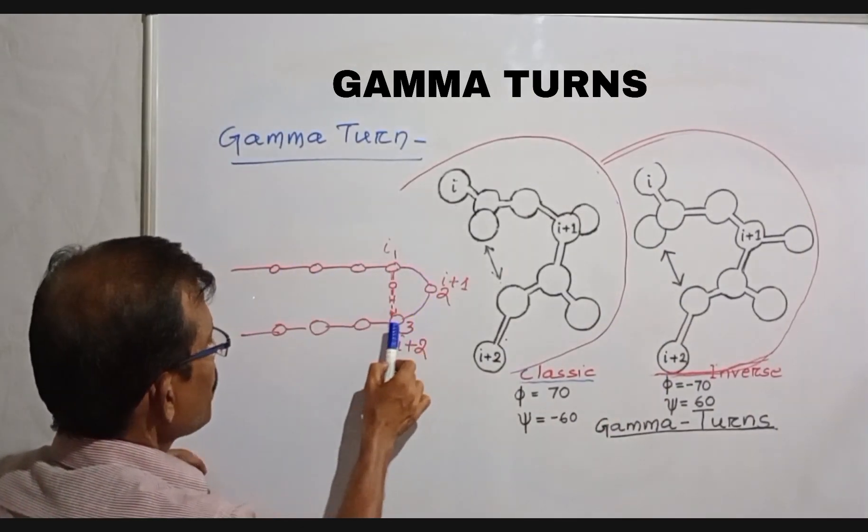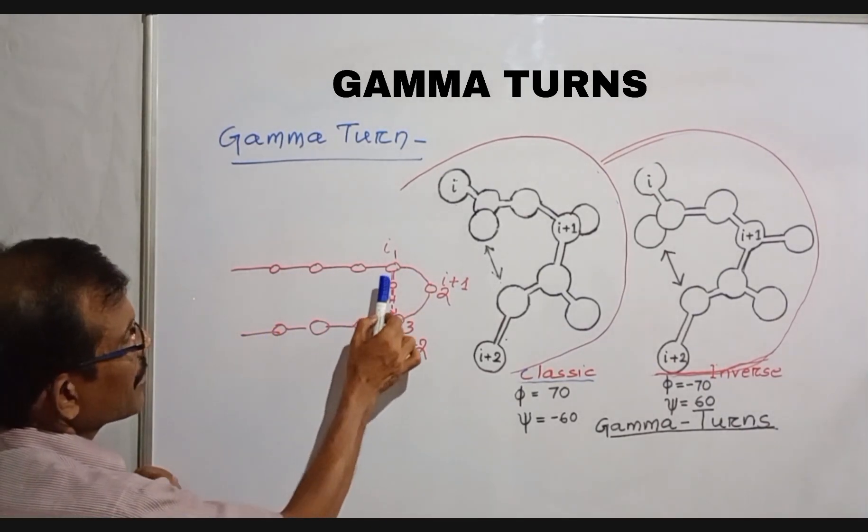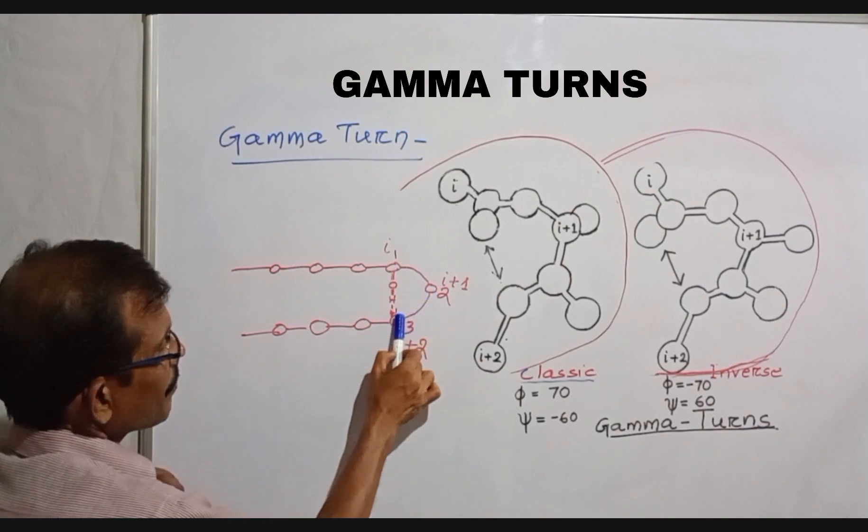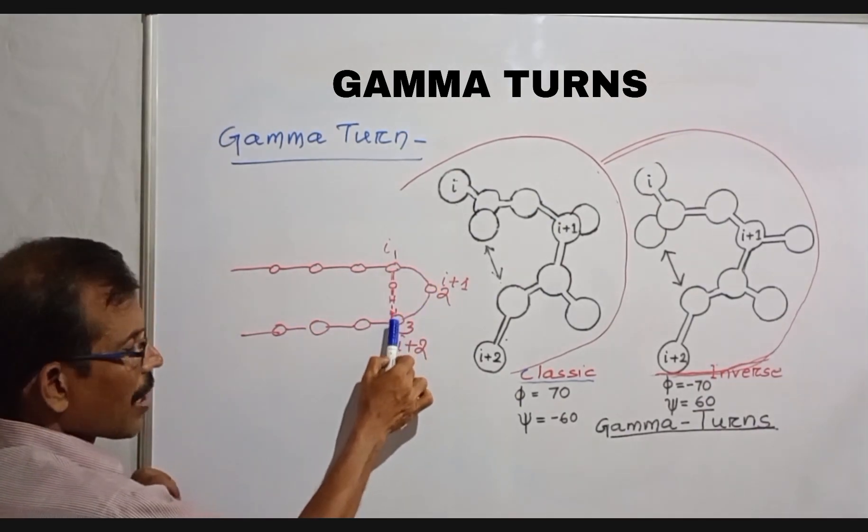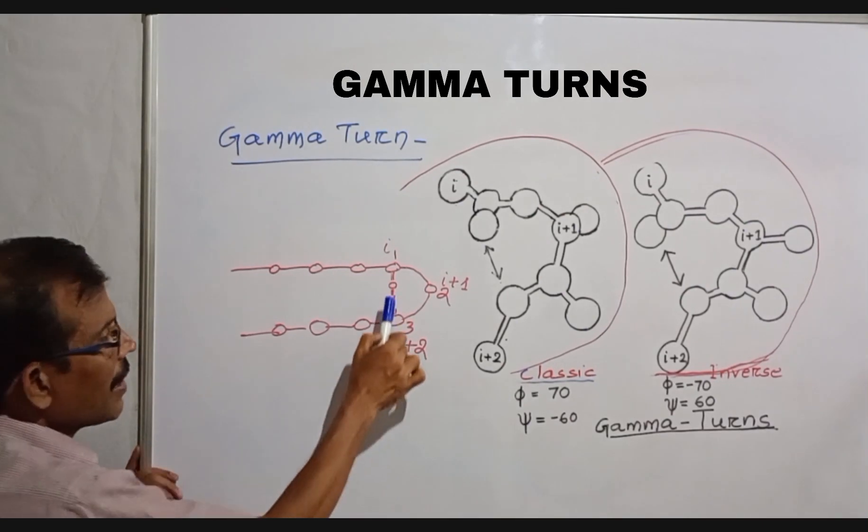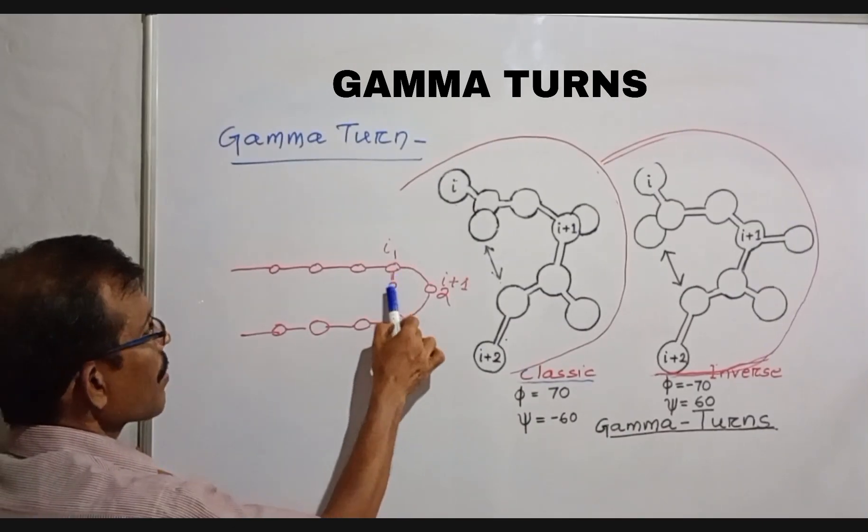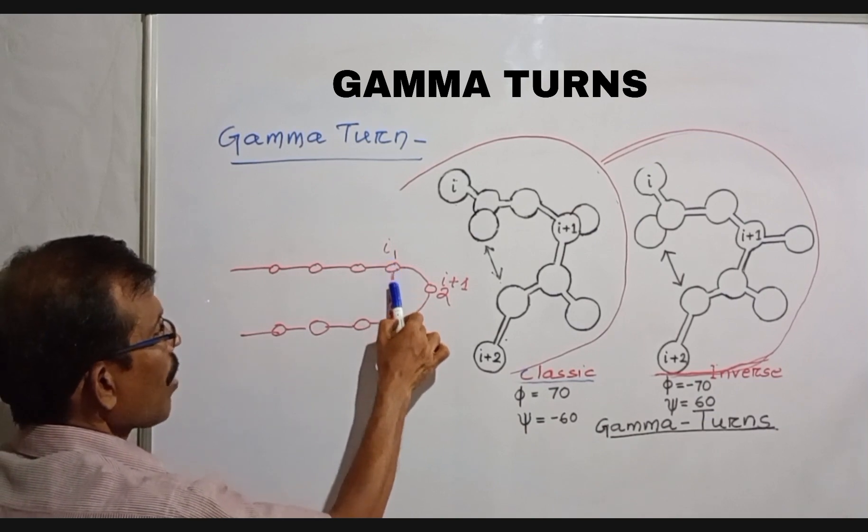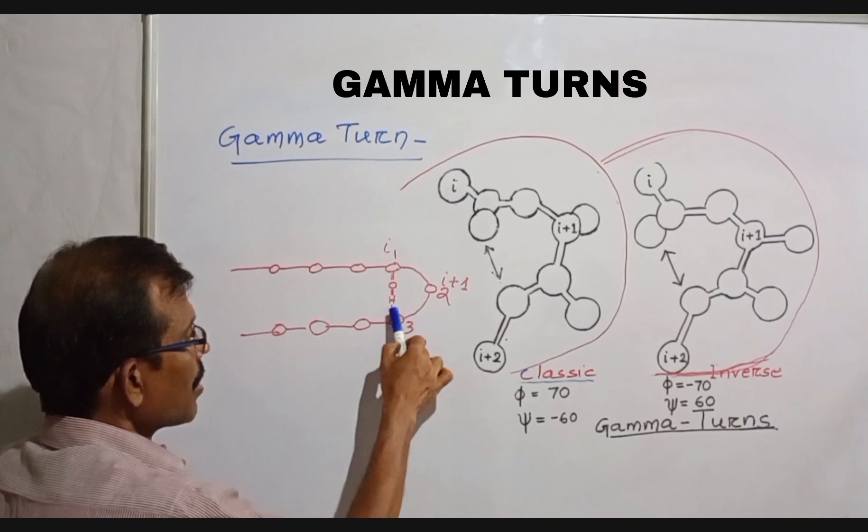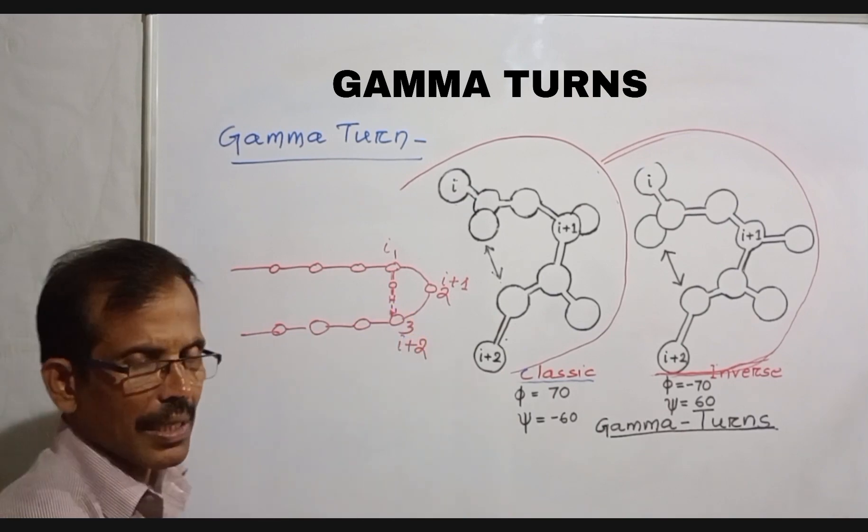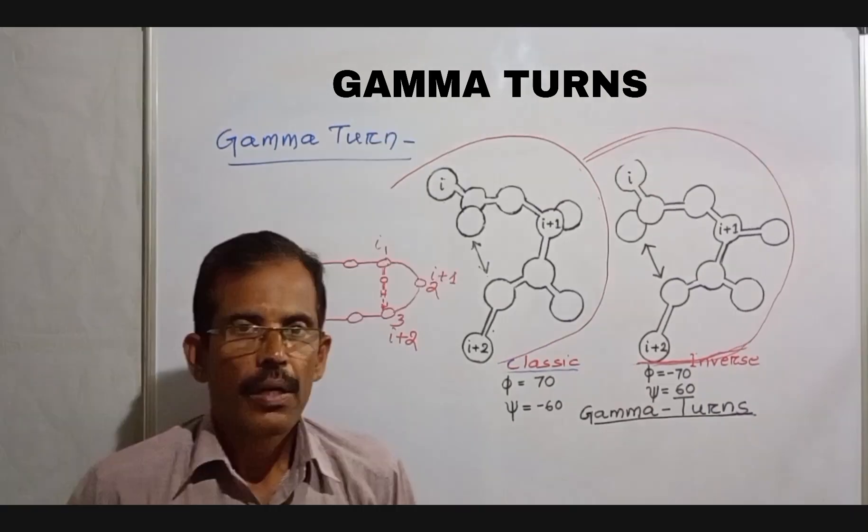This figure shows a part of the polypeptide chain. And here you can see that this is a short segment of three amino acids, which constitute one Gamma Turn. And the inter-residue hydrogen bond is formed between the carbonyl oxygen of one amino acid and the amide hydrogen of another amino acid, which is two residues ahead in the sequence.